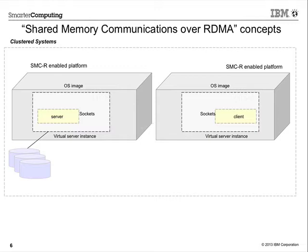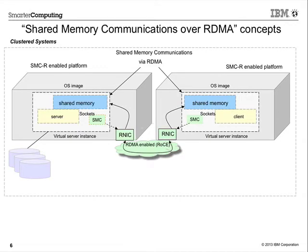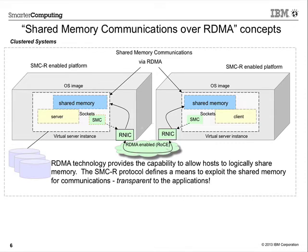On the next chart, you'll see an illustration of what SMCR is about — the concepts of the architecture. We show two distinct platforms with memory that we share logically across them for remote access. The new components are an RDMA-capable NIC along with an SMC stack shown below the sockets layer — transparent to the sockets layer. SMCR allows applications to transparently exploit RDMA using TCP sockets semantics.